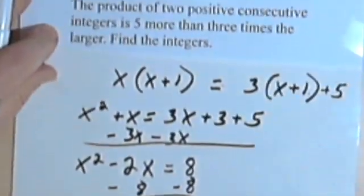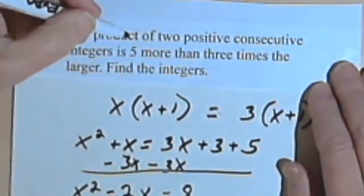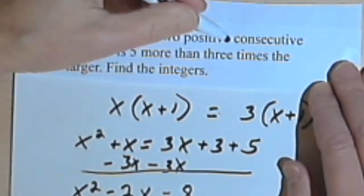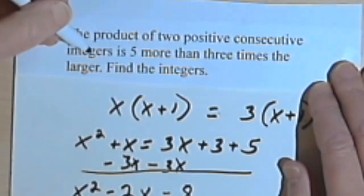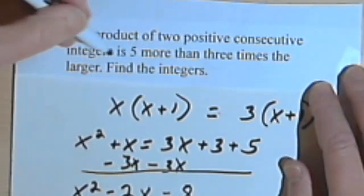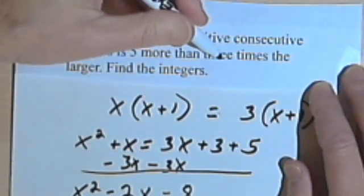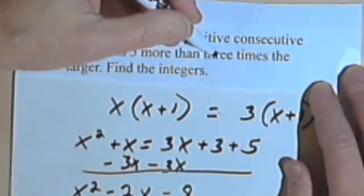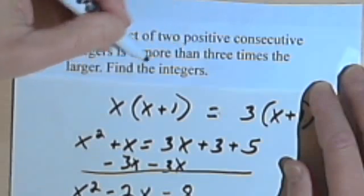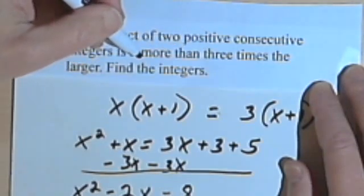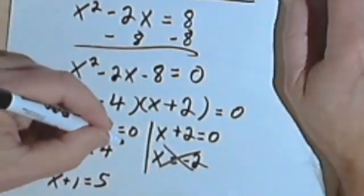Let's go back to the problem and make sure that works. The product of two consecutive positive integers—the product of 4 and 5 is 20—is 5 more than 3 times the larger. The larger one was 5, 3 times 5 is 15, and 5 more than that is 20. So this answer is going to work.